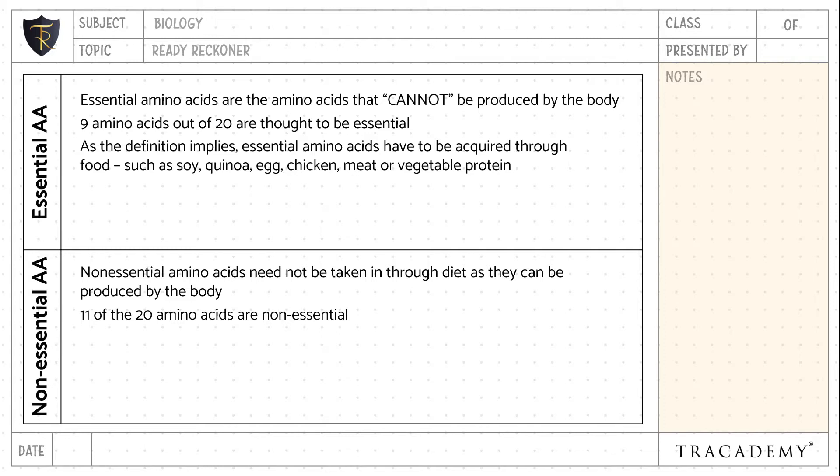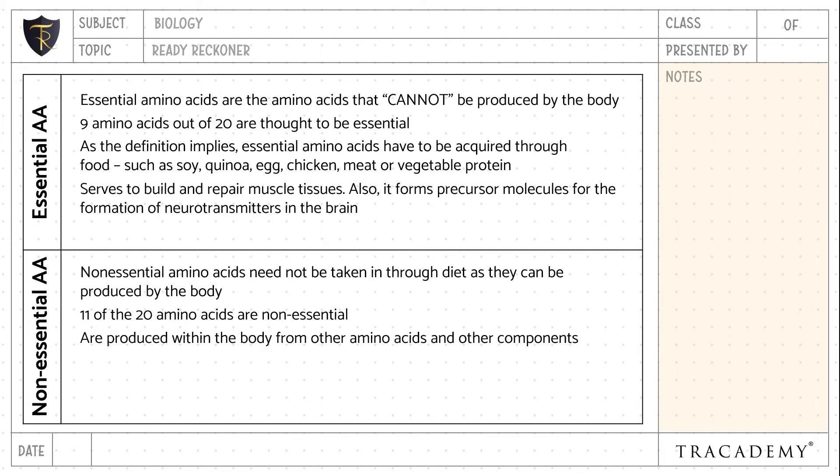As the definition implies, essential amino acids have to be acquired through food such as soy, quinoa, egg, chicken, meat, or vegetable protein. Non-essential amino acids are produced within the body from other amino acids or other components.